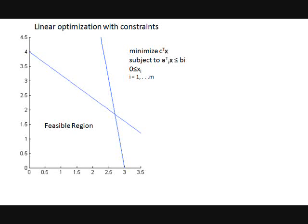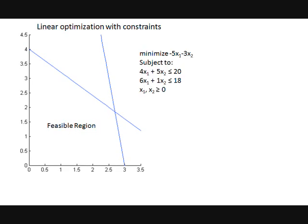A linear optimization problem, or LP, is drawn here along with its feasible region. We want to minimize our objective function zx, subject to the constraints aix less than or equal to bi, for i equals 1 to m. In this simple example, x is a two-dimensional vector.